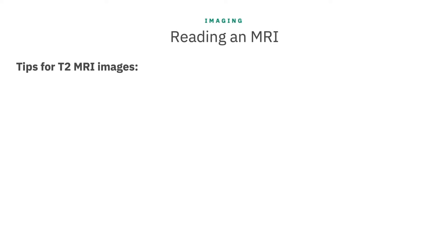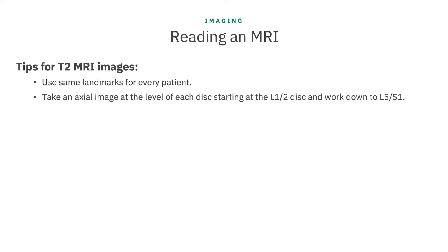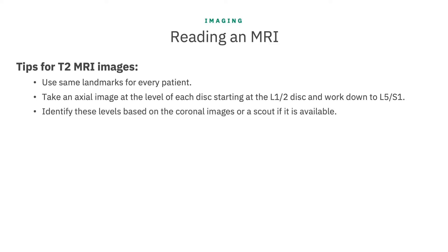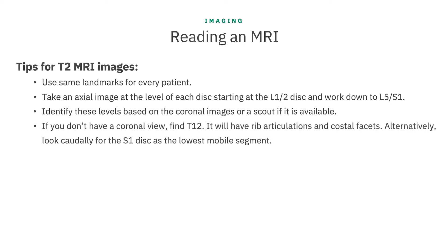When I do these measurements in my practice, I try to consistently use the same landmarks for every patient. I take an axial image at the level of each disc, starting at the L1-2 disc level and working down to L5-S1. You should be able to identify these levels based on the sagittal images or a scalp if it is available. If for some reason you don't have a good sagittal view, look for the S1 disc as the lowest mobile segment. I'm now going to show you the key structures to look out for when orienting yourself before you assess for degenerative changes.